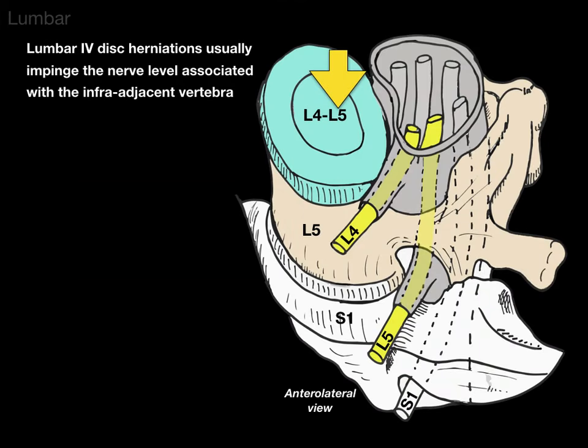Herniations are associated with the infra-adjacent vertebra. So with the L4-L5 intervertebral disc, let's look at L5 — you see that? The L5 nerve root is the one that's getting impinged, as seen in this anterior-lateral view.